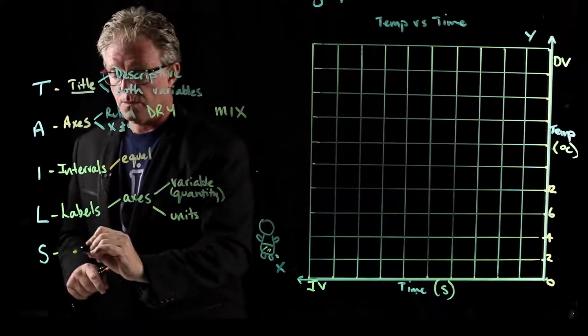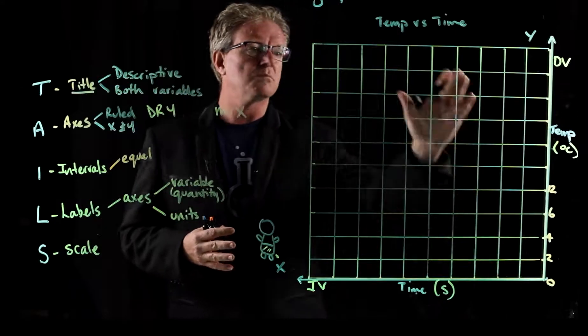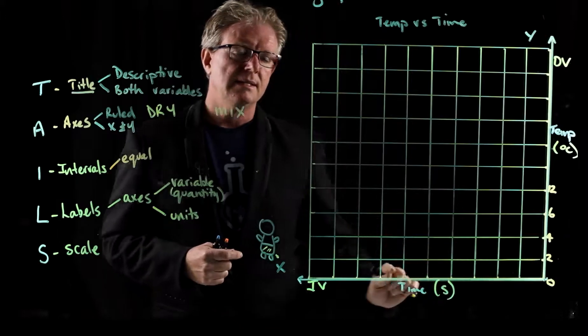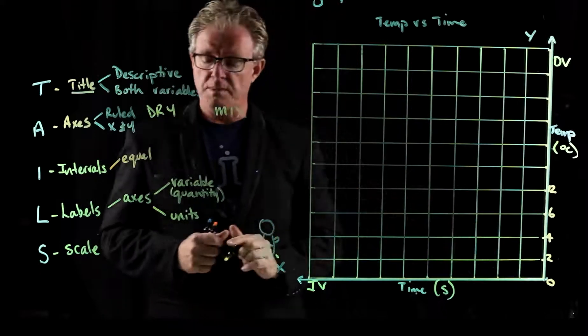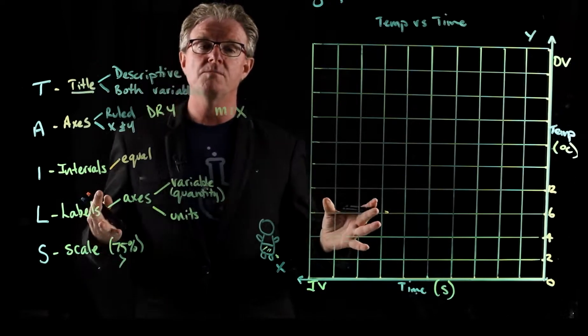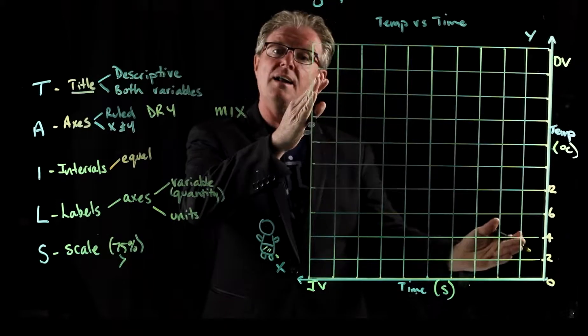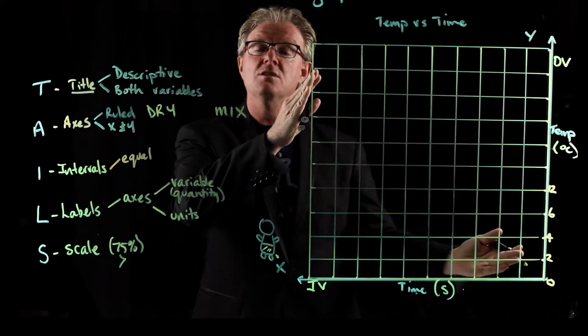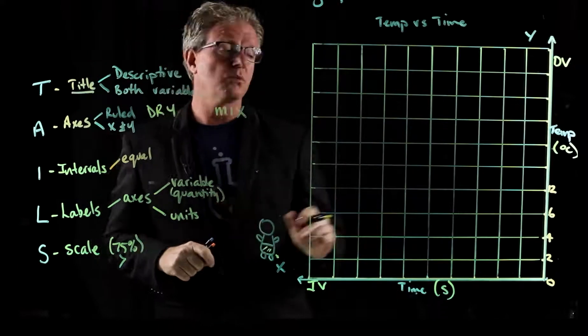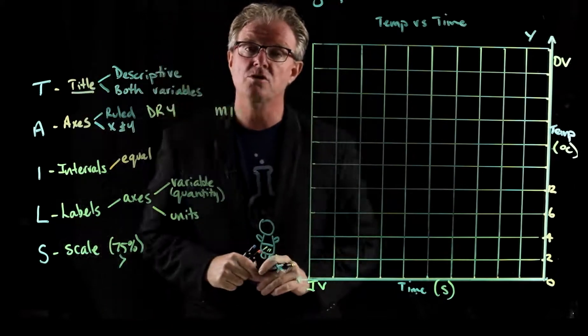What does S stand for? Well, S stands for scale. We want to make sure that we have the graph using most of the graph paper. We don't want some microscopic little graph scrawled down the corner here. We want to make sure it's using as much as the graph space as possible. And you could say maybe 75% or greater is what you're looking for. So when it comes to choosing scales, you have to choose a scale that's going to stretch the data out of as much as the graph paper as you can. Why do we do that? Well, because it's going to make it more accurate when we go to read off the graph.